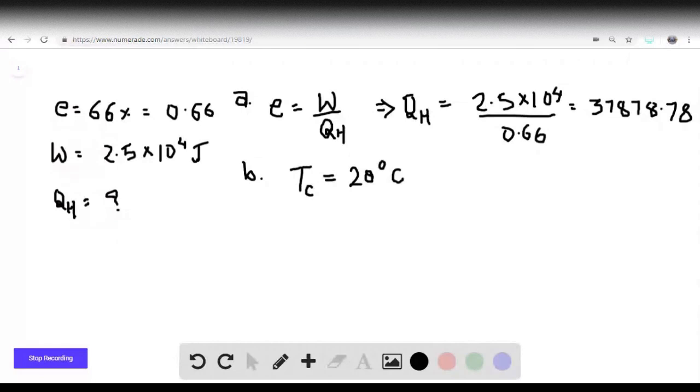Now it asks us what is the temperature of its heat source, Th is equal to what? So we can easily do this by using another formula for efficiency which says E is equal to 1 minus Tc by Th.